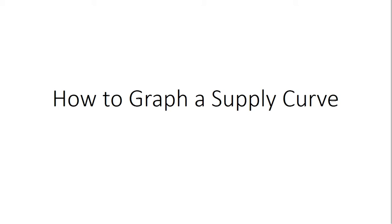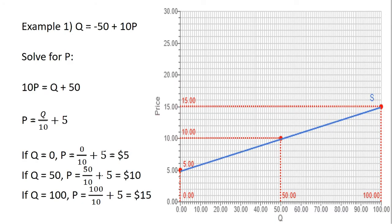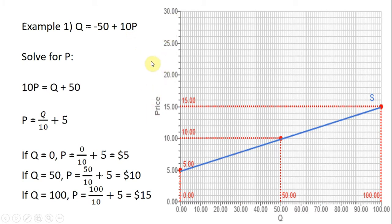In this video, we're going to look at how to graph a supply curve. We're going to start with a supply curve q equals minus 50 plus 10p, where q is the quantity supplied and p is the price. We're going to solve for the price, since when we graph supply equations, price is measured on the vertical axis. That's something I like to do — not necessary, but it's what I prefer.